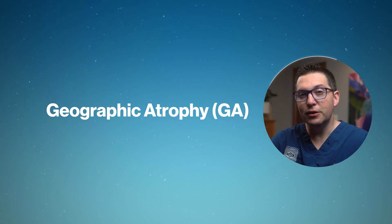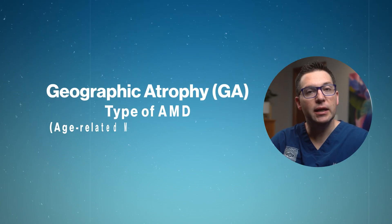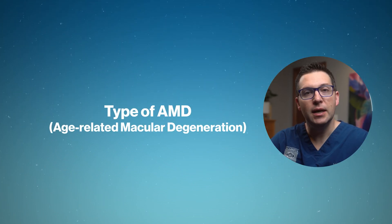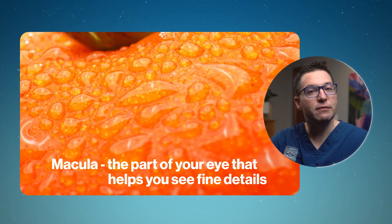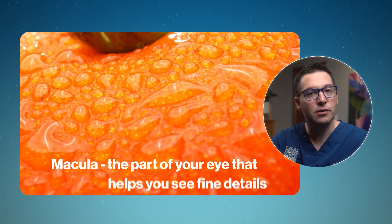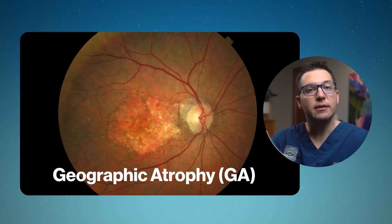So what exactly is geographic atrophy? Geographic atrophy, or GA for short, is a type of AMD. AMD is a condition that affects the macula, the part of your eye that helps you see fine details. When you have GA, the cells in the macula slowly break down and die. This can cause blurry vision and make it hard to see things clearly in the center of your vision. GA usually happens in older adults and can get worse over time.